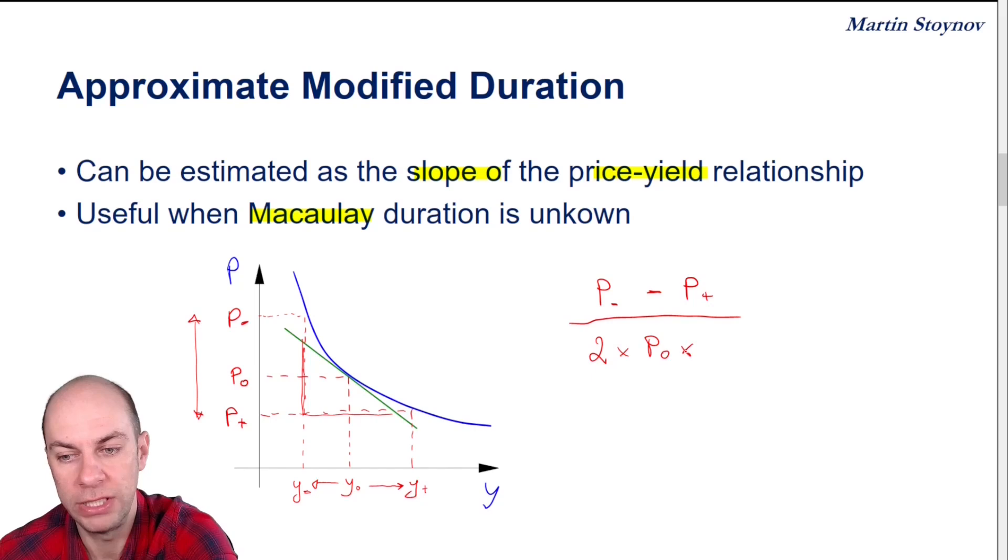And I also need to multiply here by the shock in yield. And that's going to be input as a decimal. The reason for that last input is to ensure that the output,